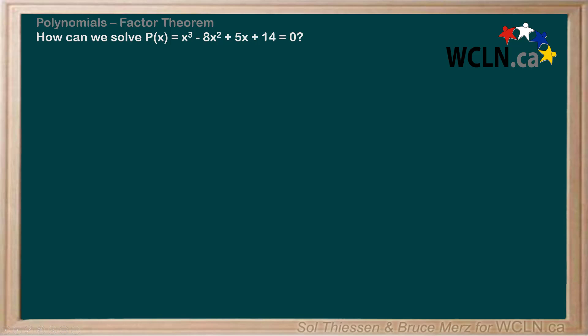How can we solve P(x) = x³ - 8x² + 5x + 14 = 0? You're probably a little stumped as to how we can go about solving this, so let's take a step back to something that's hopefully more familiar to you. Let's take a look at this example.